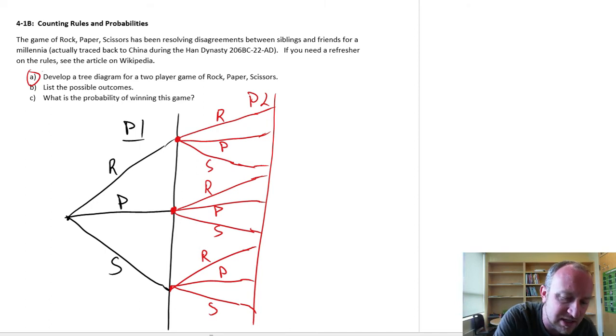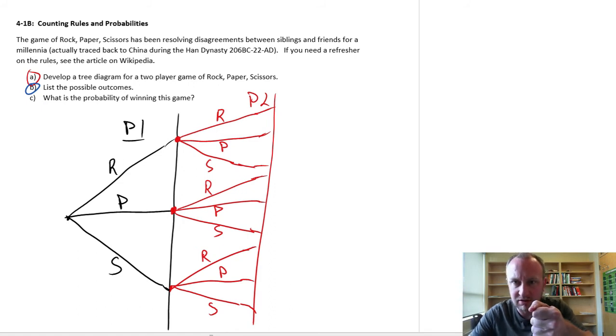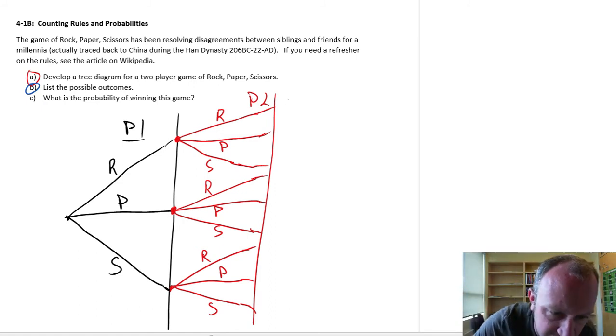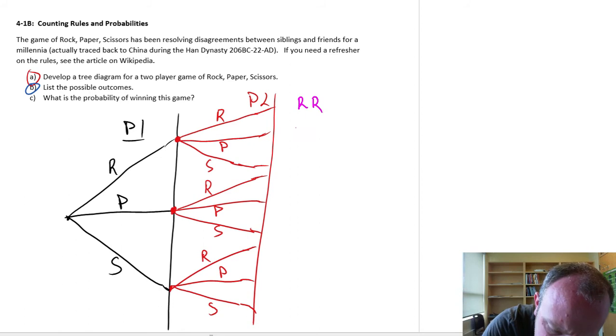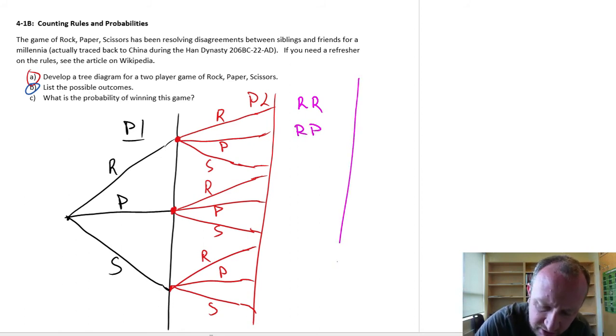Now part B, what are the possible outcomes? So in this, player one picks rock, player two picks rock, so this is rock and rock. Player one rock, player two paper. Paper covers rock. Rock and paper. So over here, in terms of the outcome of the game, this is a tie. Here, player two wins.